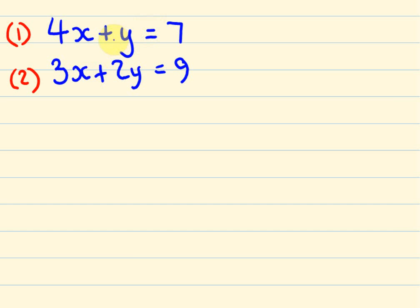The way that we do this is we have to get at least one set of these coefficients, the numbers in front of these variables, the same. As you see at the moment, this is the same as 1y, this is 2y, this is 4x, this is 3x. So none of them match up. The y's are different, the x's are different.